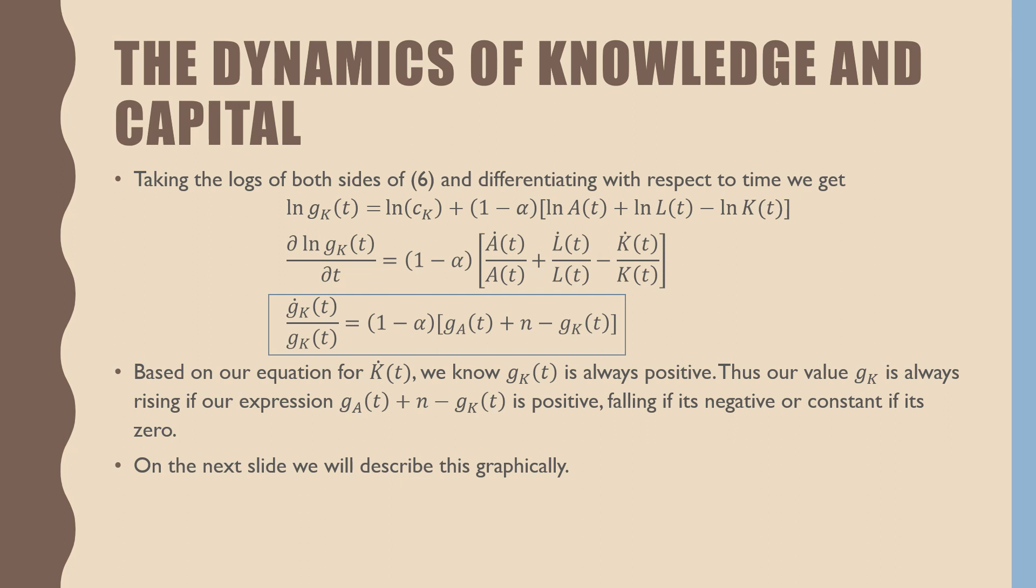Based on our equation for capital transition, we know that our growth rate of capital stock is always positive. Thus, our value Gk is always rising if the expression Gat plus N minus Gkt is positive, and falling if it's negative or constant if it is equal to zero. On the next slide, we will describe this equation graphically.